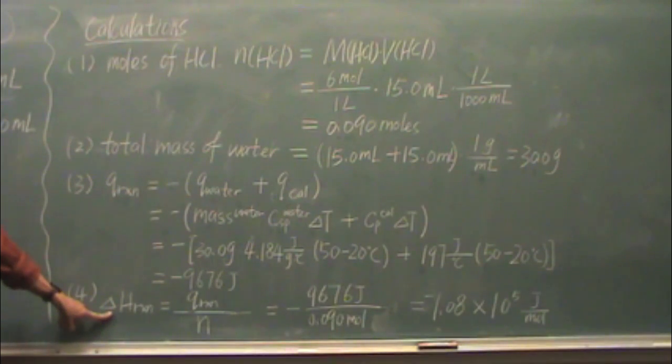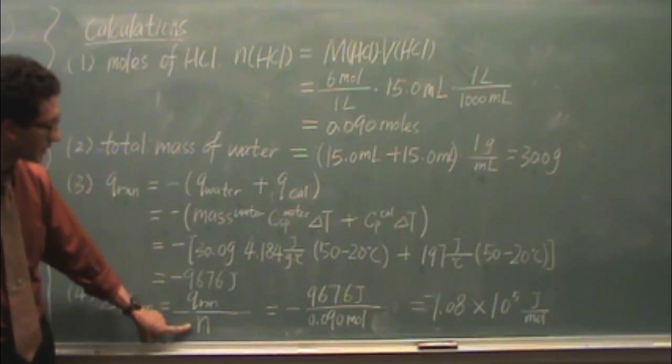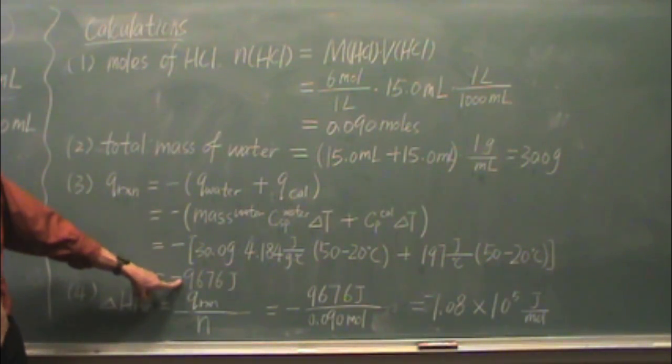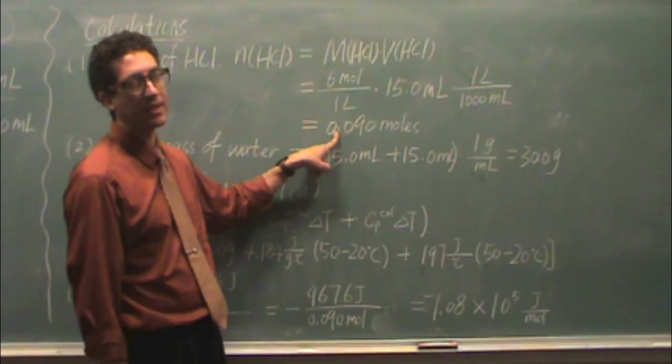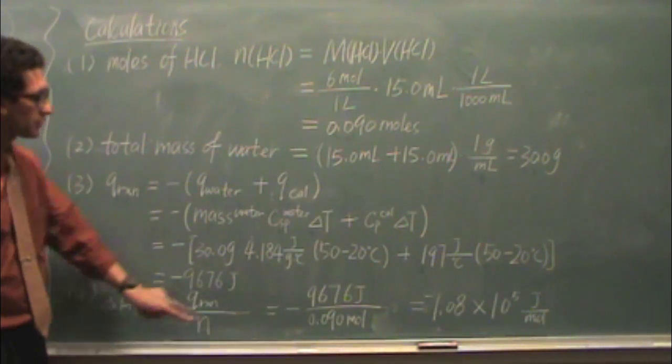So delta H of reaction, just like part three, is Q of reaction divided by N. That's moles. Q of reaction is right here, negative 96.76. Moles is 0.090 moles. So you just put those two numbers in.